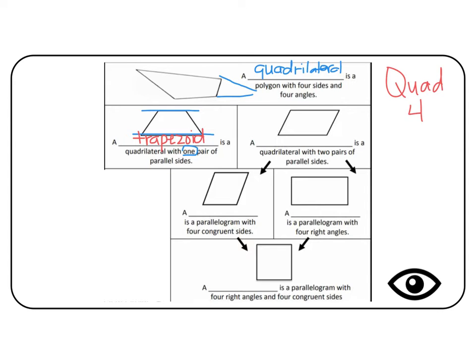But if it has more than one pair of parallel sides, then we use that word parallel in it. It's called a parallelogram when both pairs are parallel.